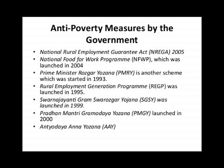There are many anti-poverty methods initiated by our government to control poverty. These include: NREGA, National Food for Work Program, Prime Minister Rojgaar Yojana, Rural Employment Generation Program, Swarna Janti Gram Swarojgaar Yojana, and Pradhan Mantri Gramudhyay Yojana.